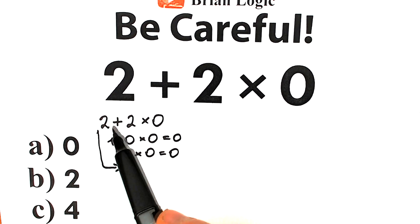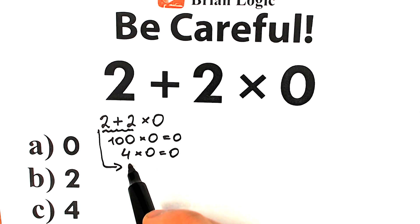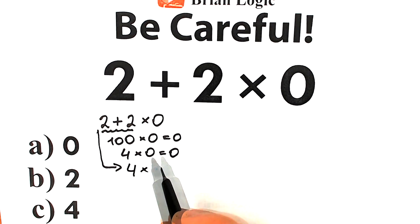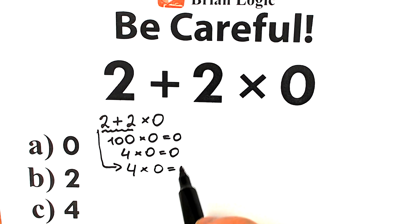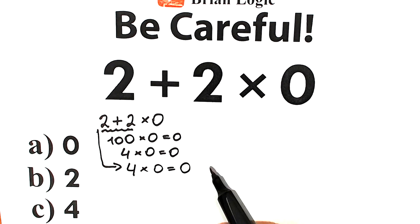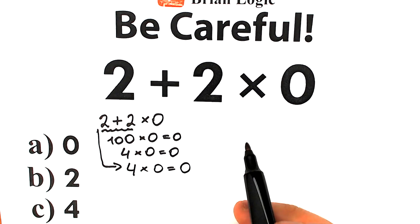A lot of students say: we have 2 plus 2 on the left-hand side, which equals 4, and then multiply 4 times 0, which equals 0. But in math we should know the correct order to do this problem — we can't solve it randomly. We should know the correct order of operations.